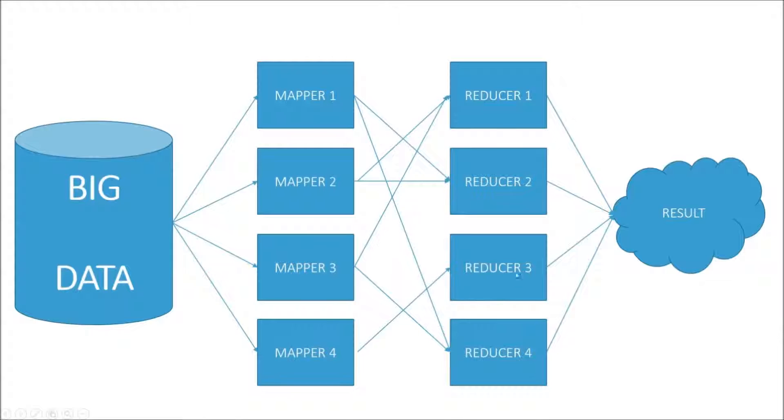So it would always go to, say, reducer three if it was number one. Now, let's say another value for key number one comes into mapper three. Again, it will have to go to reducer three because the same reducer will always handle the same key values. So that's what's happening in this little mess here.